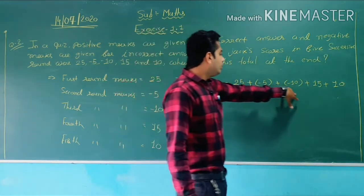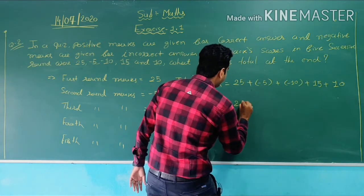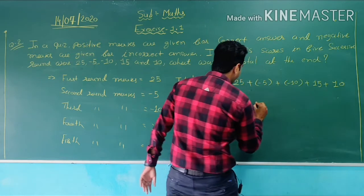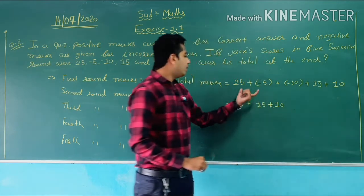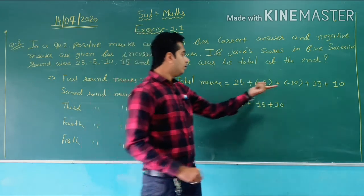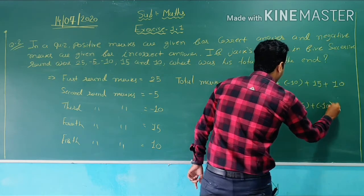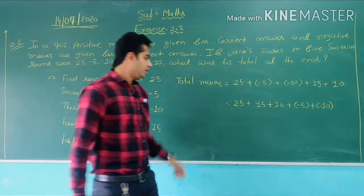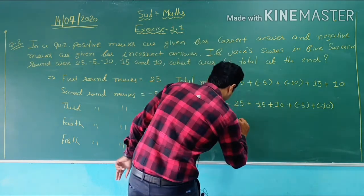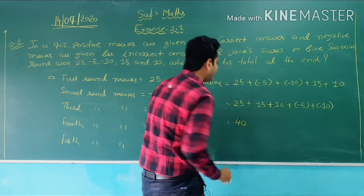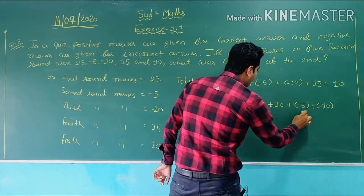For simplification, I will put all the positive numbers on one side and the negative numbers on the other side. So: 25 plus 15 plus 10 on the positive side. Negative numbers: in the bracket minus 5, plus in the bracket minus 10. Now we just have to simplify. 25 plus 15 is 40. Then 40 plus 10. On this side, first I will remove the bracket, so it will be minus 5.